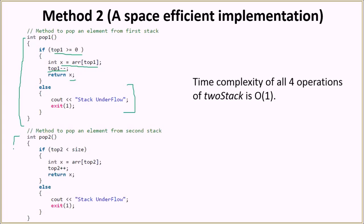Similarly, for pop2, here we have the condition top2 is smaller than size. If top2 is smaller than size, that means it has the element. Otherwise, we print stack underflow. If it has the element, then again we get the element inside x. Then we do top2++ and then we return the popped element, that is x.